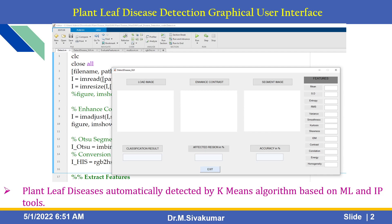This is a plant-leaf disease detection graphical user interface. You can load the image here, enhance the contrast image, segment the image, and you can also see the classification result, affected region, and accuracy. Feature data includes means, entropy, RMS, smoothness, skewness, contrast, correlation, etc. This plant-leaf disease is automatically detected by the k-means algorithm based on machine learning and image processing tools.